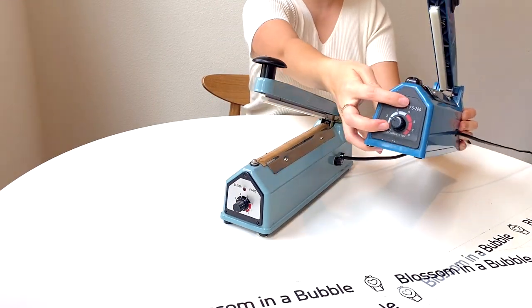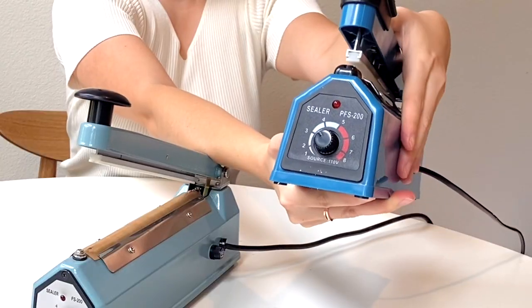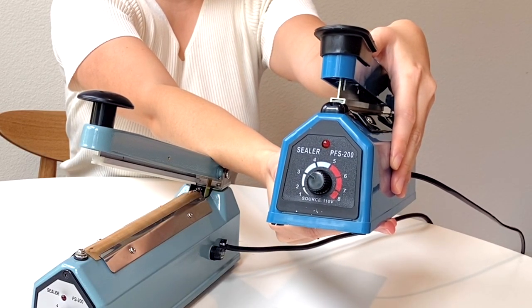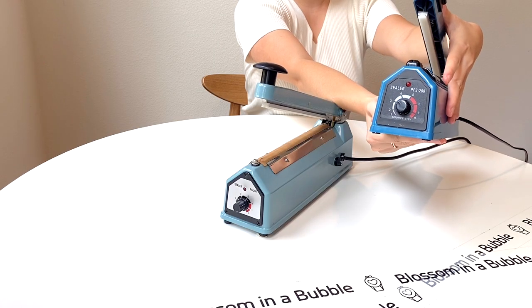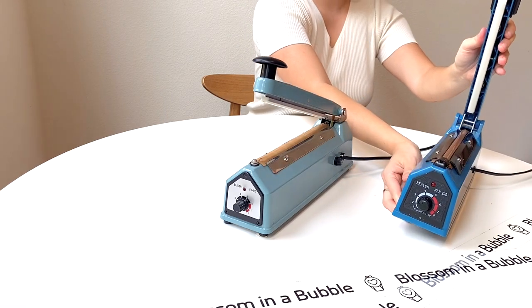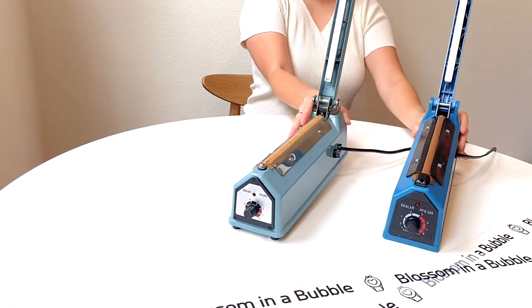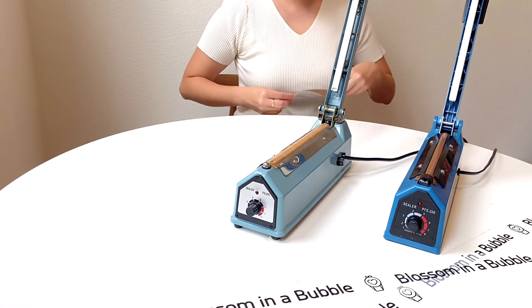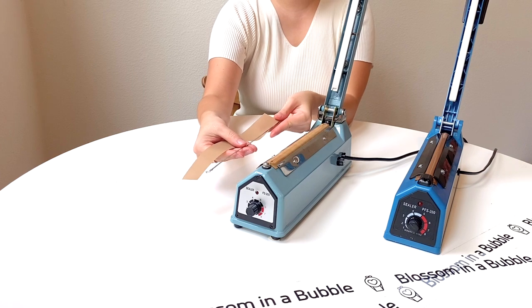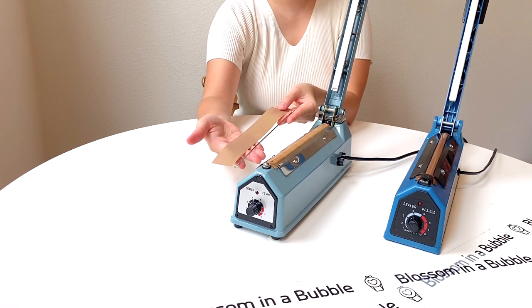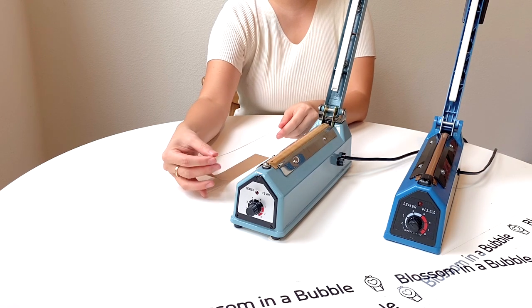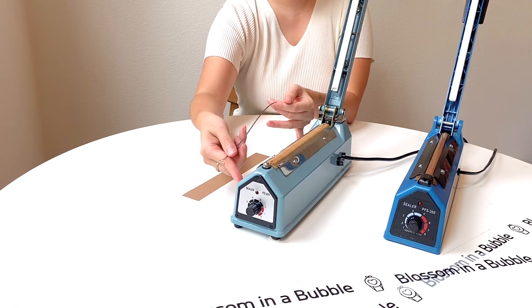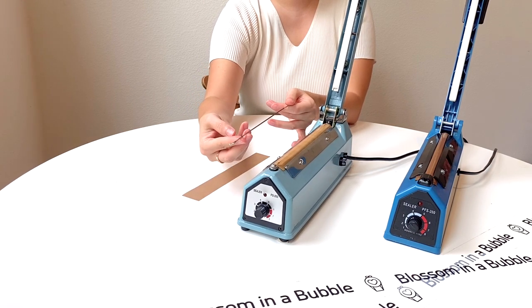And let's see the second one. It seems like same as first one. There is a wire inside of the machine. It looks like this - a wire and fabric. The wire's thickness is gonna be your sealing line.